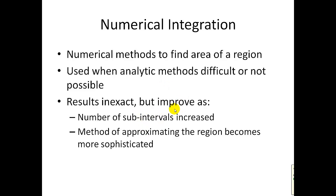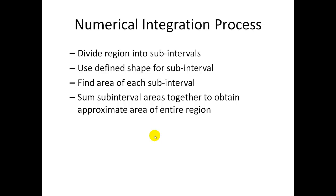However, the results are inexact, but they get better if we increase the number of sub-intervals and use better methods of approximating what the sub-interval actually looks like. The general process is to divide the region into smaller sub-intervals, use a defined shape for the sub-interval, find the area of each piece, and add them together to obtain the approximate area of the entire region.